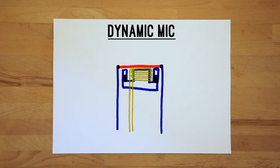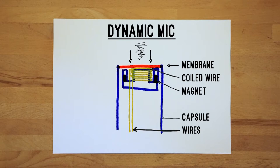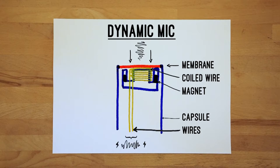The basis of a dynamic mic consists of a magnet, coiled wire and a membrane, placed in the microphone's capsule. The coiled wire is attached to the membrane, so that when sound waves hit the membrane and move it, the coil moves too. The magnet provides a magnetic field that the coil moves within. When the coiled wire moves near the magnet, an electric current is induced, which is key to this design. The movement of the membrane and the coiled wire creates variations in the electrical current, which forms the output of the microphone. This output signal also needs to be sent to a preamp to boost the signal up to the right level.